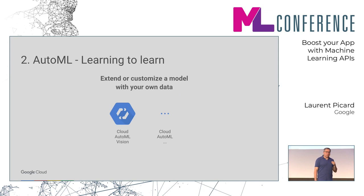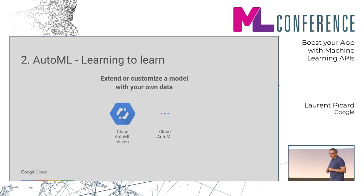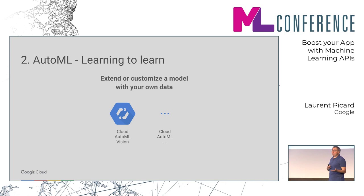The second solution is AutoML. I will not go into details because it would be worth a talk by itself. What you can do with AutoML is use an existing machine learning neural network and customize it with your own data. We have a first solution called Cloud AutoML Vision, and the whole family will expand. It uses techniques like transfer learning and hyperparameter optimization. It allows you to build your own model without being a data scientist, and even without being a developer at all.